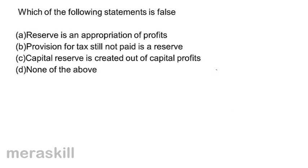Which of the following statements is false? A, reserve is an appropriation of profits. B, provision for tax still not paid is a reserve. C, capital reserve is created out of capital profits — also true. Provision for tax not paid does not become a reserve, so the statement which is false is B. Correct answer B.